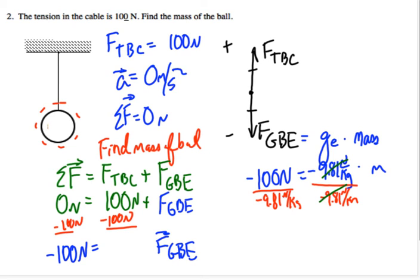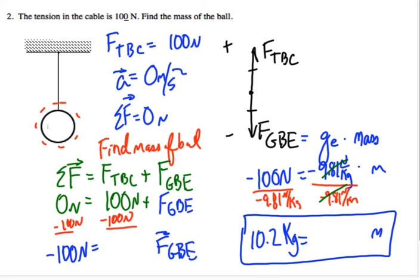And so these cancel out over here. And now we've got mass equals 100 divided by 9.81 is about 10.2. And that's newtons cancel out. So you've got 1 over 1 over kilograms, which is just kilograms. 10.2 kilograms.